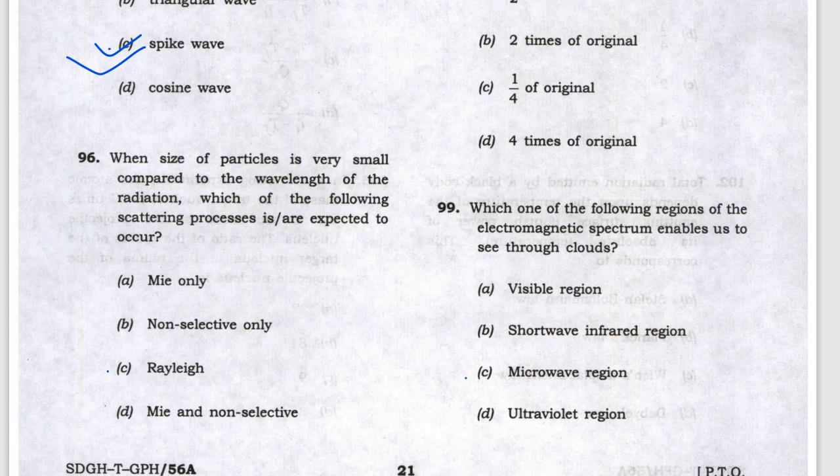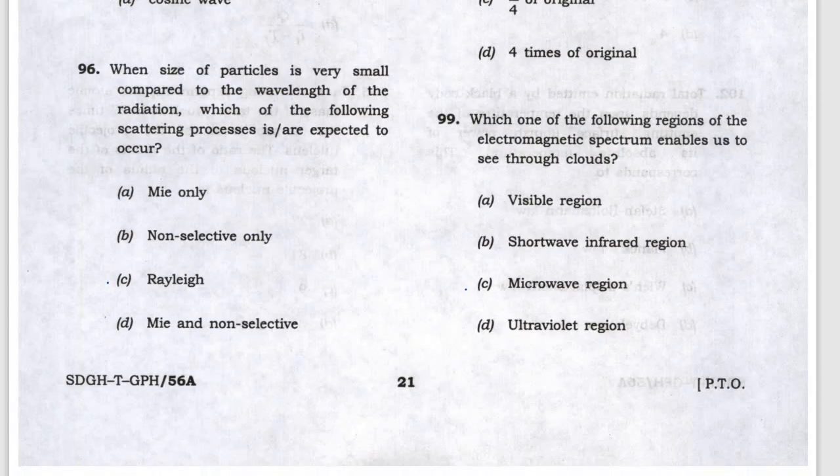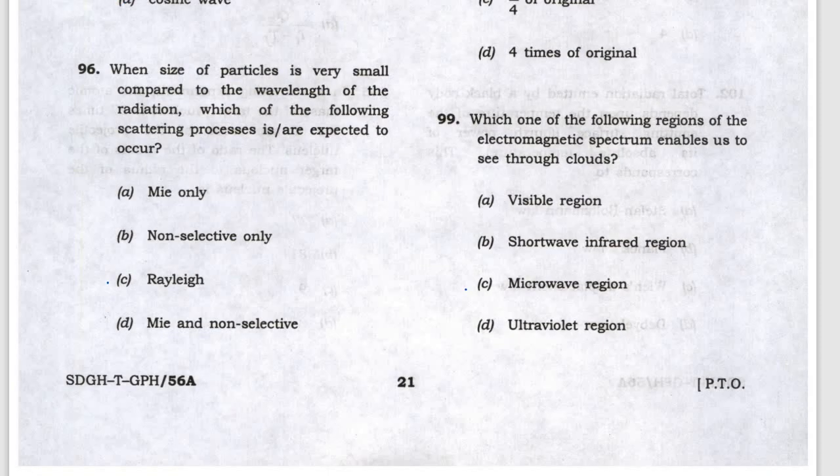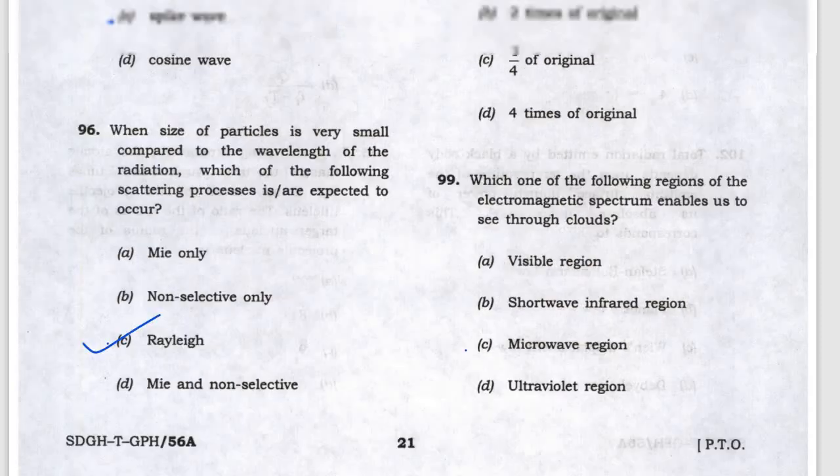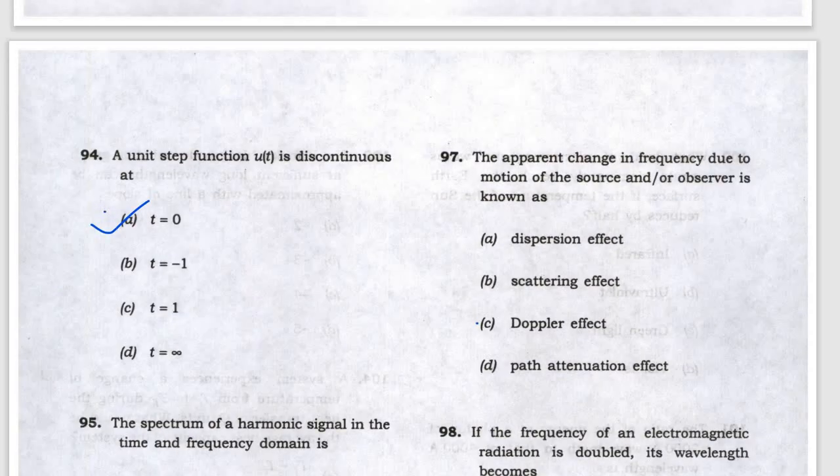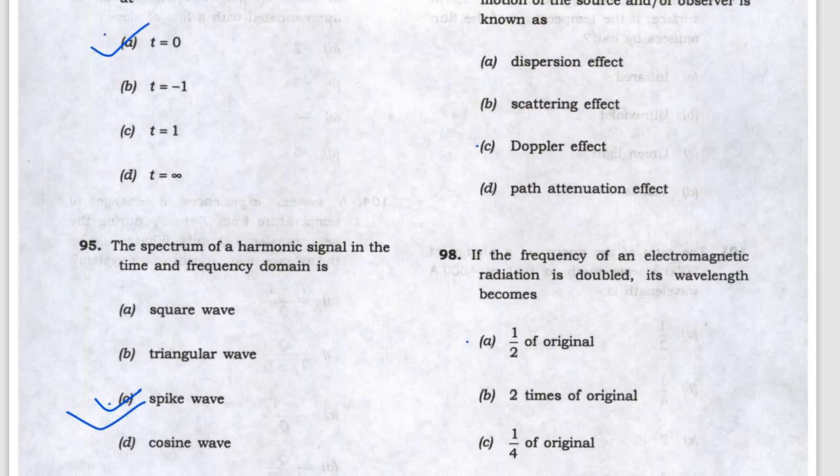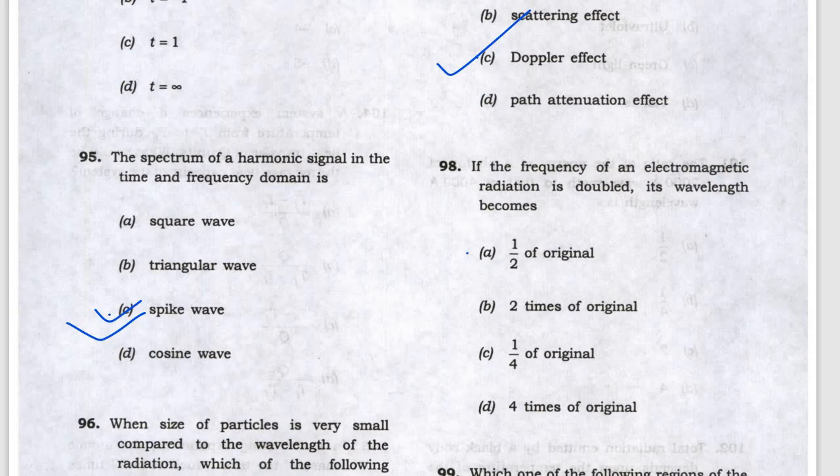For the scattering problem, when particle size is very small compared to wavelength, this is Rayleigh scattering. The apparent change in frequency due to motion of the source is the Doppler effect. When frequency doubles, wavelength becomes half due to inverse relationship.